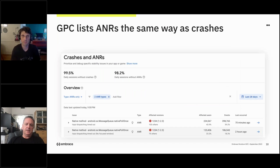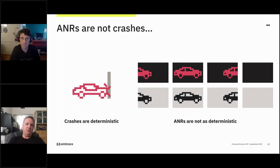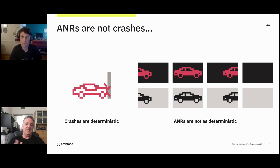Another thing that's a little confusing is how Google Play Console lists ANRs — they're listed in a similar way as crashes. But it's really important to recognize that ANRs are very, very different from crashes. Crashes are deterministic. Normally you'll get a stack trace that shows you where the crash happened, but that doesn't always make it easy to solve. Solving ANRs is even more challenging.